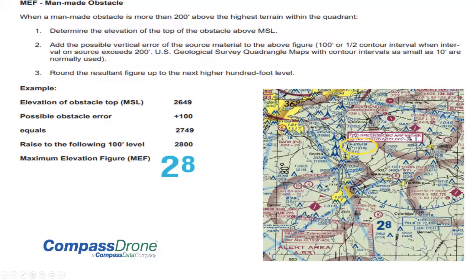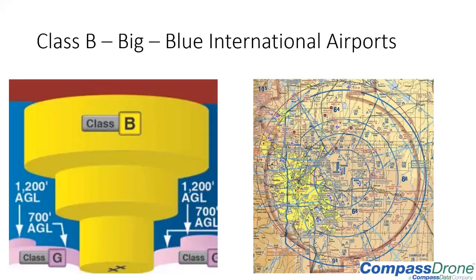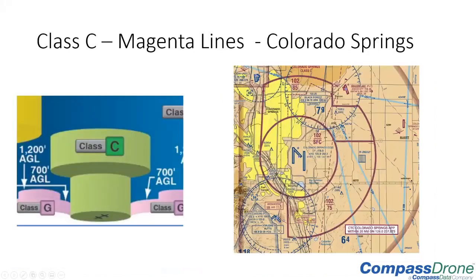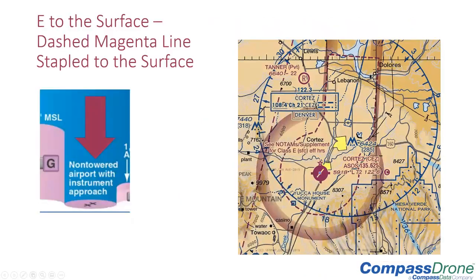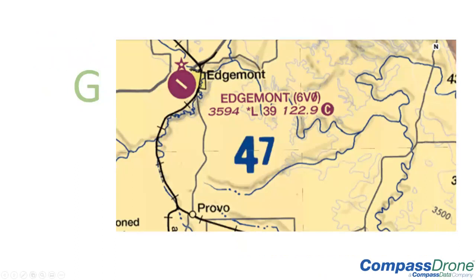To review: Bravo airports are big international airports depicted in blue — definitely need coordination. Class Charlie airports have solid magenta lines — definitely need coordination, but you can operate underneath the Charlie shelf in Class G. Class Delta airports have the blue stapled dashed line indicating controlled airspace to the surface. Class Echo is more complex — magenta stapled to the surface means controlled to the surface and additional coordination required. Class G is rural America, also found under those Bravo and Charlie shelves — rated Part 107 pilots can operate there freely.